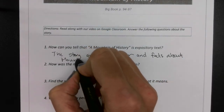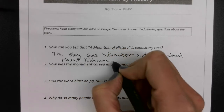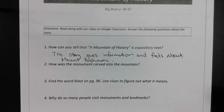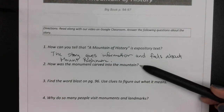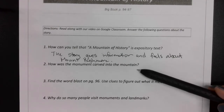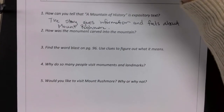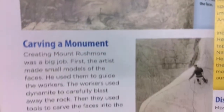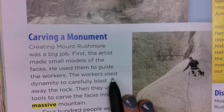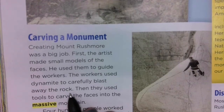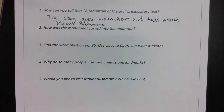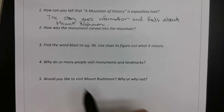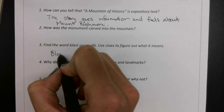Question two: How was the monument carved into the mountain? Reread if you don't remember the answer to that. Number three says: find the word blast on page 96. Use clues to figure out what it means. We look on page 96: the workers used dynamite to carefully blast away the rock — so what does blast mean? Blast means to move the rock out of the way.